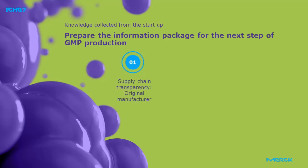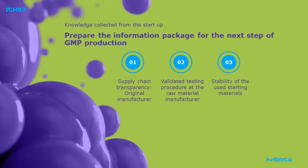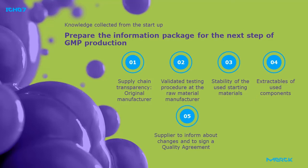Key information categories include: information about the original manufacturer; knowledge about the validation of the release testing of raw materials; information about the shelf life of the material; information about impurities, such as extractables of used components; whether the supplier is capable of informing about changes and signing a QA agreement; and finally, whether the provided information would be available during the shelf life of the product.